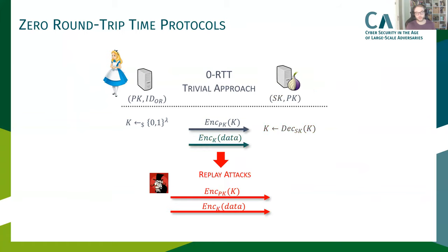Another weakness is the missing replay protection. An attacker can easily replay this encrypted symmetric key and the zero round-trip time data to the Onion Router. In the worst case, an Onion Router would reestablish a circuit, and the attacker can use this information to gain information about starting points and endpoints and break the unlinkability property.